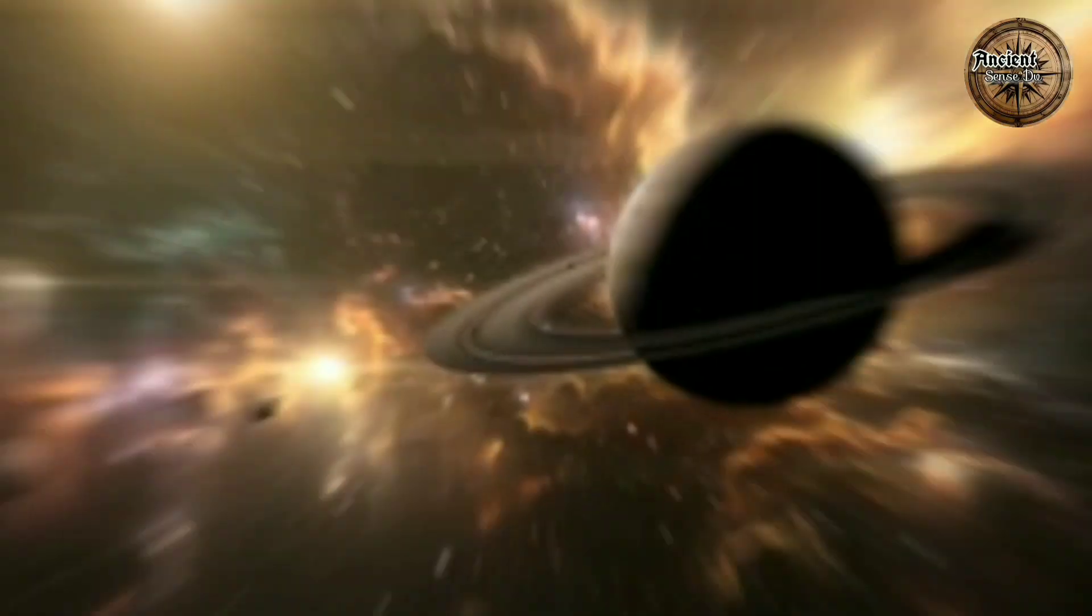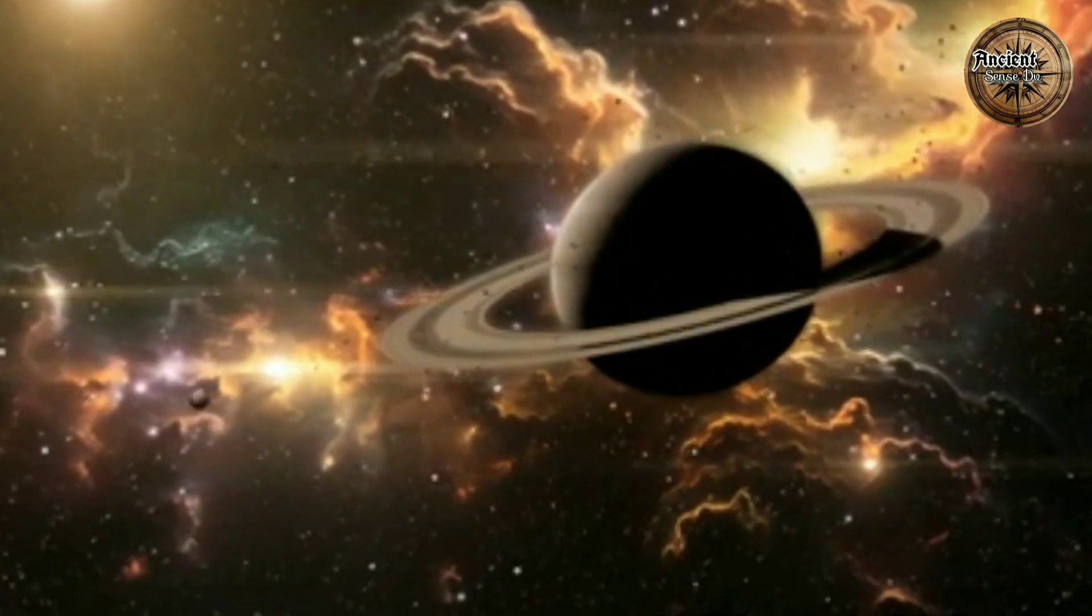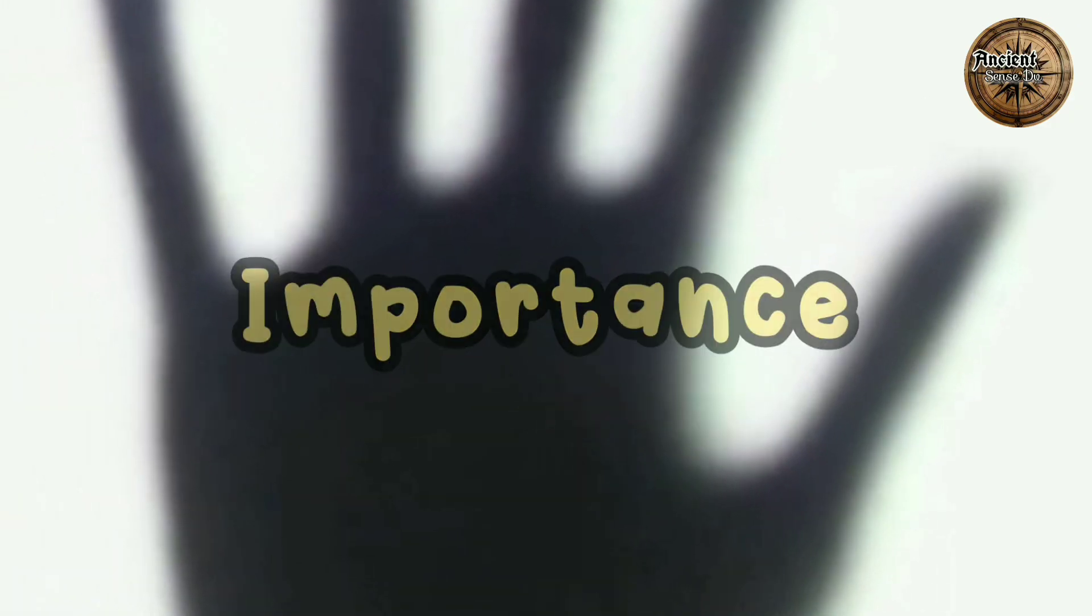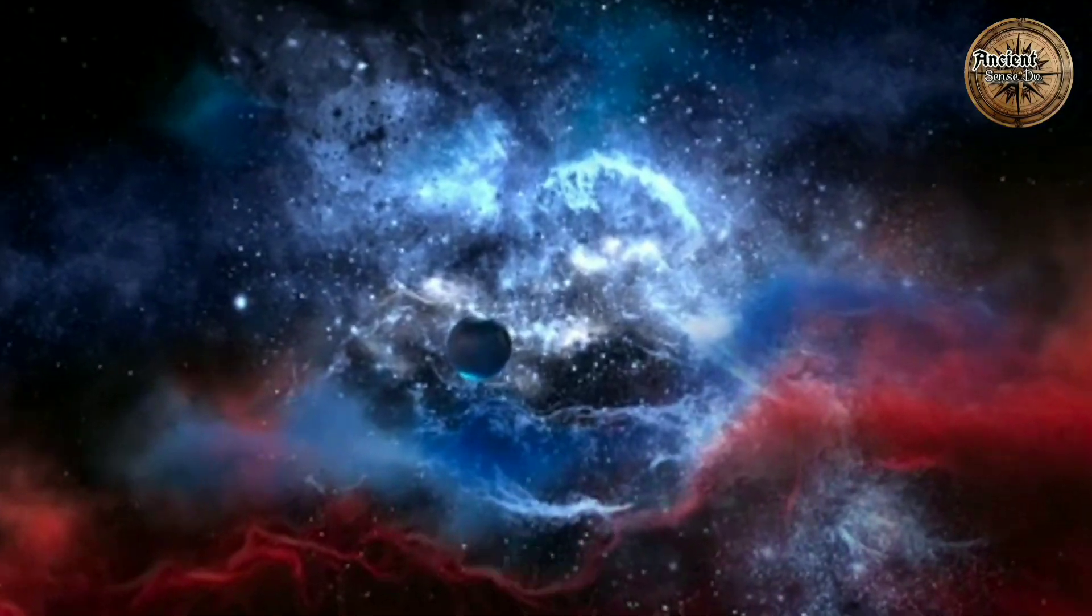Much of the remaining material formed the planets and other objects that now orbit the sun. The sun is an ordinary star, one of about 100 billion in our galaxy, the Milky Way.